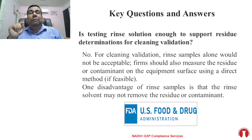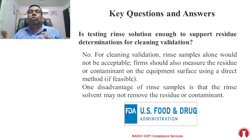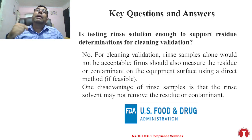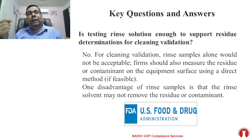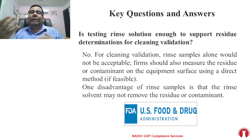The focus of FDA is that you need to obtain additional sampling using swab samples, because it is a direct sampling method from the equipment. One disadvantage of rinse sampling is that the rinse solvent may not remove the residue or contaminant — it may be trapped in hard-to-reach areas. If you use a swab, it will allow removal of residue from those hard-to-clean or hard-to-reach areas. That is the reason: if you are using only rinse sampling, it is not acceptable. You need direct sampling such as swab sampling. This is the clear message given by FDA.